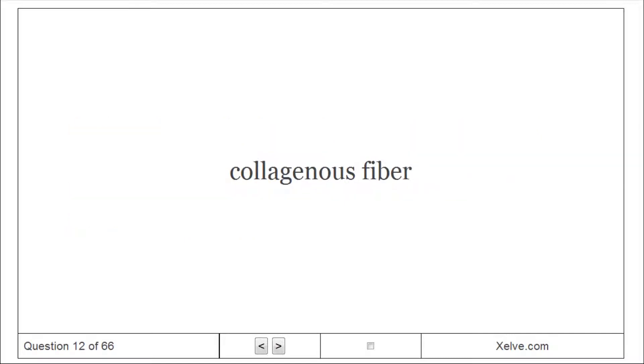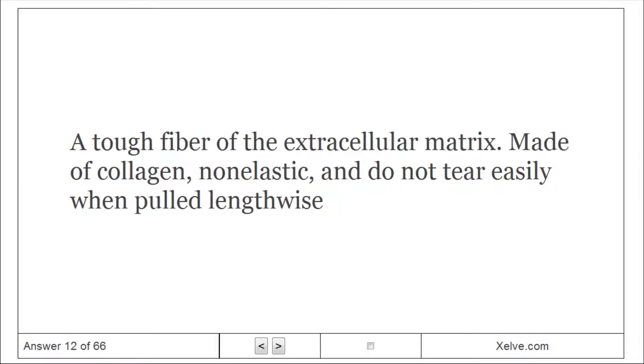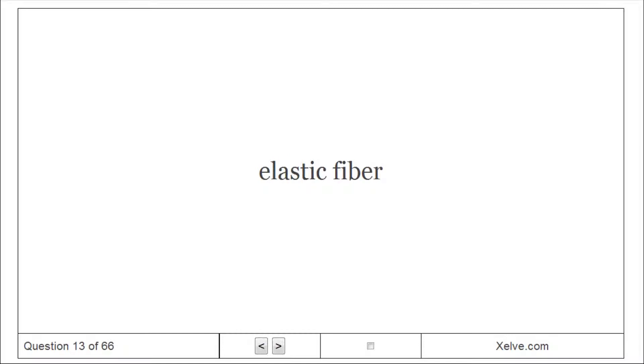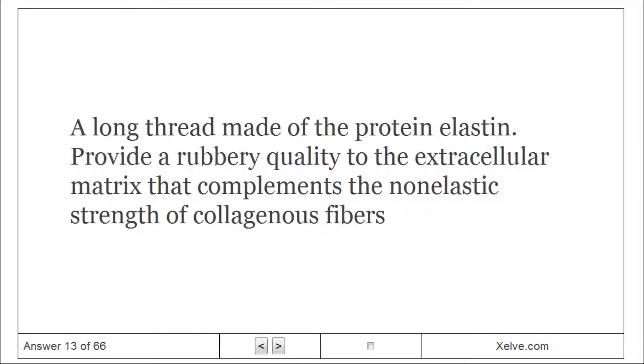Collagenous fiber: A tough fiber of the extracellular matrix made of collagen, non-elastic, and do not tear easily when pulled lengthwise. Elastic fiber: A long thread made of the protein elastin, provides a rubbery quality to the extracellular matrix that complements the non-elastic strength of collagenous fibers.